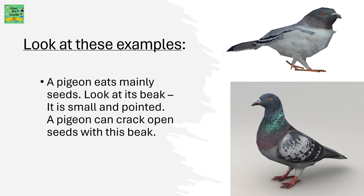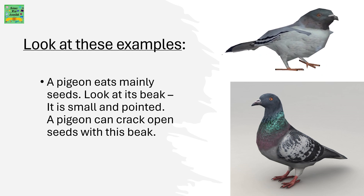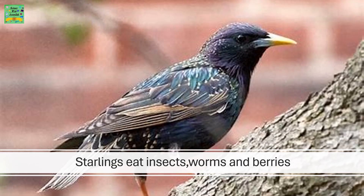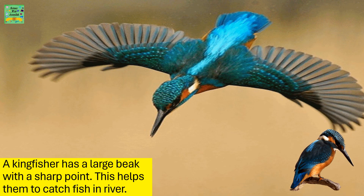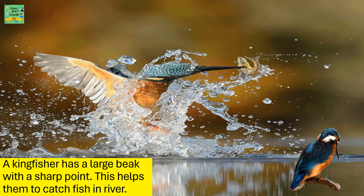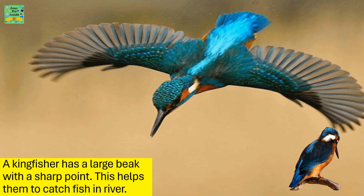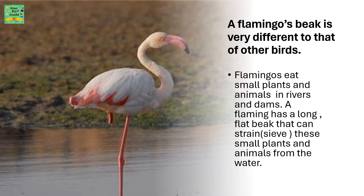Look at these examples. A pigeon eats mainly seeds — look at its beak, it's small and pointed. A pigeon can crack open seeds with its beak. Starlings eat insects, worms, and berries. A kingfisher has a large beak with a sharp point, which helps it catch fish in rivers. A flamingo's beak is very different to other birds. Flamingos eat small plants and animals in rivers and dams. A flamingo has a long flat beak that can strain — also called sieving — these small plants and animals from the water.